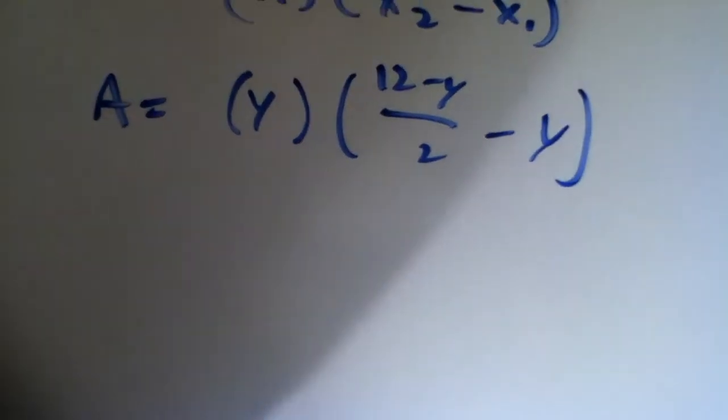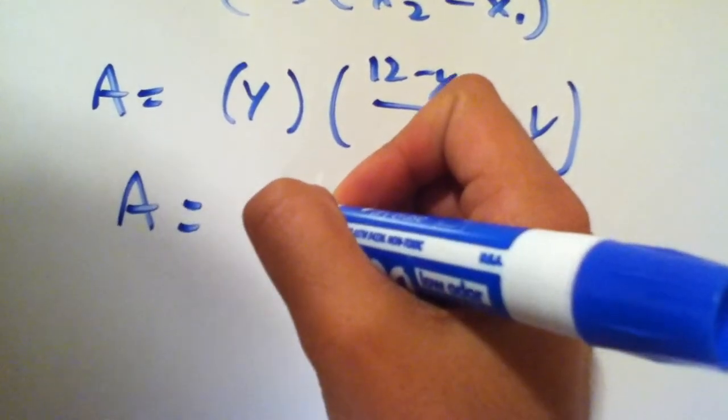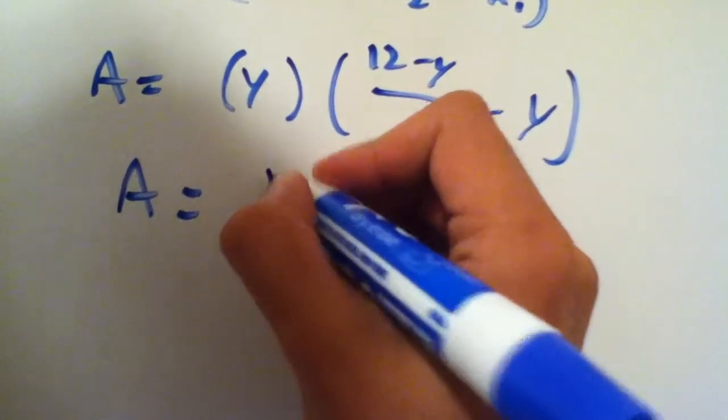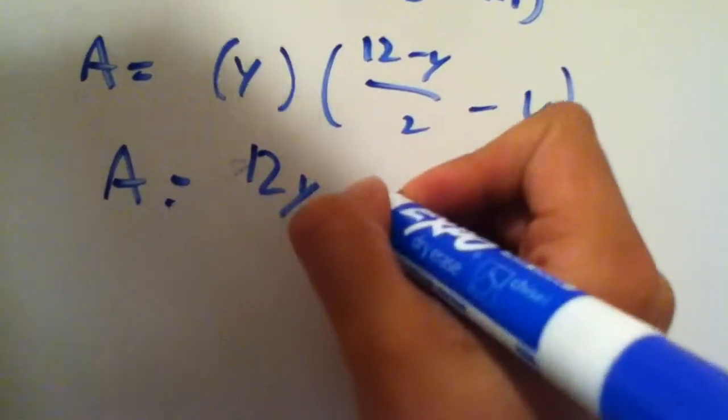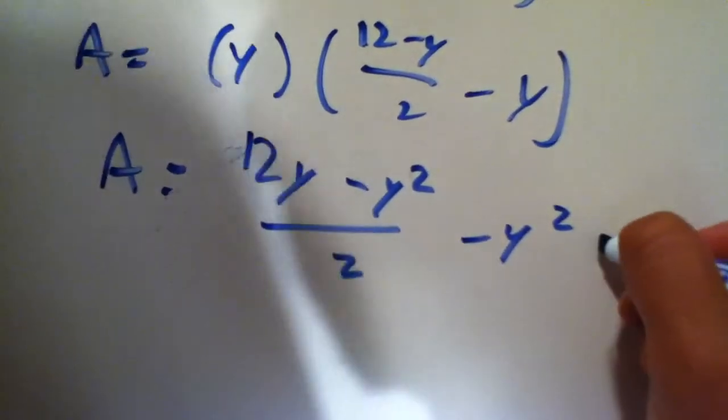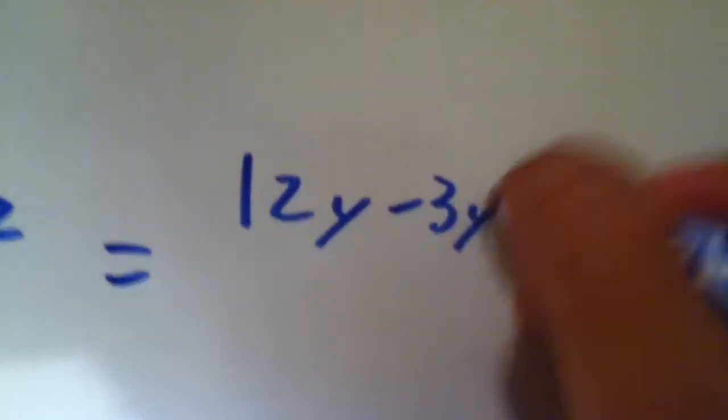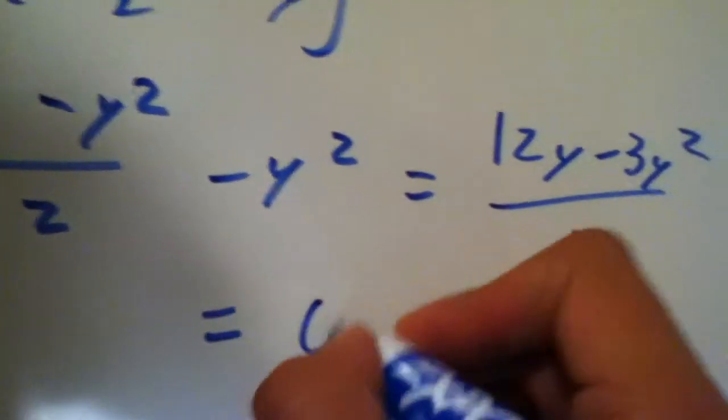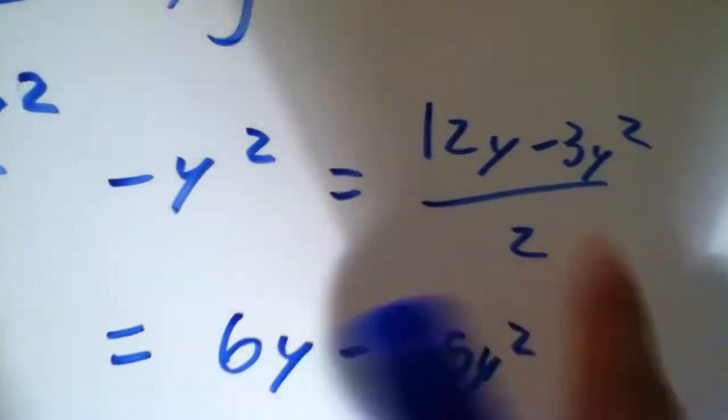Taking the derivative of this, or actually before we take the derivative, let's simplify this more. So A equals, if we multiply the y inside, we get 12y minus y squared over 2 minus y squared, which is then simplified to 12y minus 3y squared over 2. I'm just taking it all under the same denominator. And further simplify to 6y minus 1.5y squared. That's just the 2 divided over both of those things.